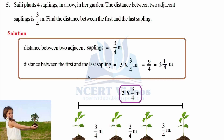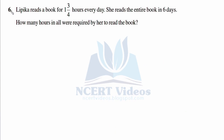Therefore we multiply by 3, not 4. So 3 times 3 is 9 over 4 — it is improper. Converting: 4 twos are 8, remainder 1, giving 2 and 1 over 4. The distance between the first and the last sapling is 2 and 1/4 meters.